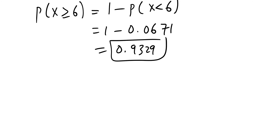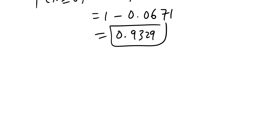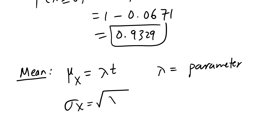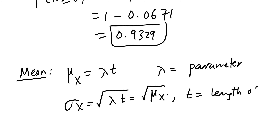For this discrete probability distribution we also have the mean and standard deviation. When X follows a Poisson process with parameters λ and t, the mean (expected value) is μ = λt, and the standard deviation is σ = √(λt) — the square root of the mean. Here t is the length of the interval.